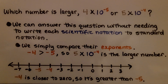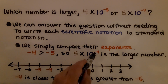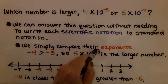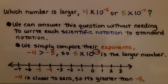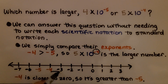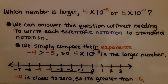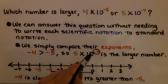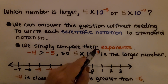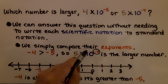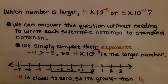So 5 times 10 to the negative 4th power has the greater exponent and is the larger number. Negative 4 is closer to 0 on a number line, so it's greater than negative 5. Therefore, 10 raised to the negative 4th power is automatically the larger number.